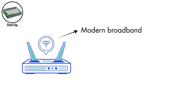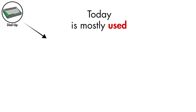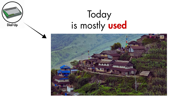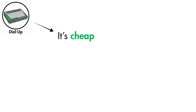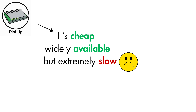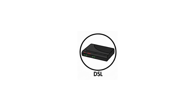Modern broadband, by comparison, often stays below 70 milliseconds. Today, dial-up is mostly used in remote areas where broadband isn't available or affordable. It works for basic tasks like checking text-only emails or loading very simple websites. It's cheap and widely available, but extremely slow, blocks phone calls, and suffers from high latency.